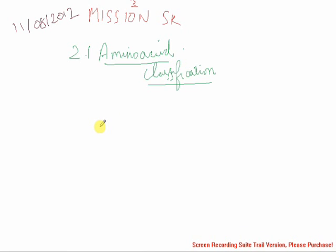Welcome one and all to Mission SK, session 2.1, Amino Acid Classification. In this session, we are going to see how the amino acids are classified. The 20 amino acids are classified into five distinct groups.